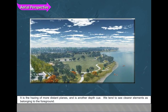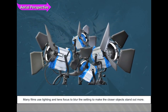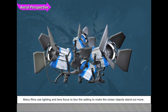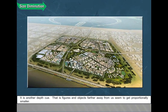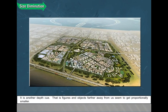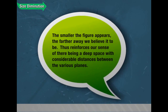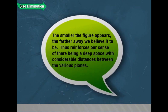Aerial perspective is the hazing of more distant planes and is another depth cue. We tend to see clearer elements as belonging to the foreground. Many films use lighting and lens focus to blur the setting to make closer objects stand out more. Size diminution is another depth cue — figures and objects farther away seem proportionally smaller. The smaller the figure appears, the farther away we believe it to be, reinforcing our sense of deep space with considerable distances between planes.